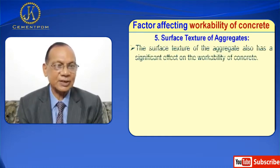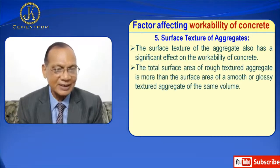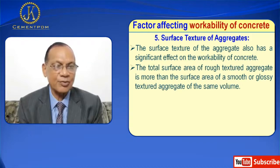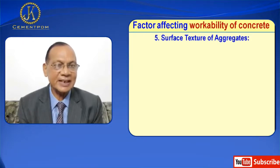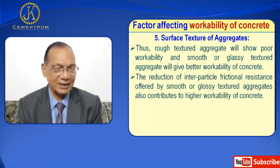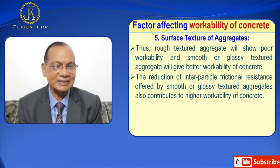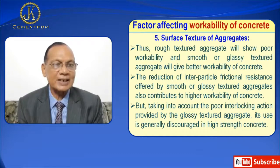Now surface texture of aggregate. The surface texture of the aggregate also has a significant effect on the workability of concrete. The total surface area of rough texture aggregate is more than the surface area of a smooth or glassy texture aggregate of the same volume. Thus rough texture aggregates will show poor workability, and smooth or glassy texture aggregate will give better workability of concrete. The reduction of inter-particle frictional resistance offered by smooth or glassy texture aggregate also contributes to higher workability. However, the poor interlocking action provided by the glassy texture aggregate means its use is generally discouraged in high-strength concrete.